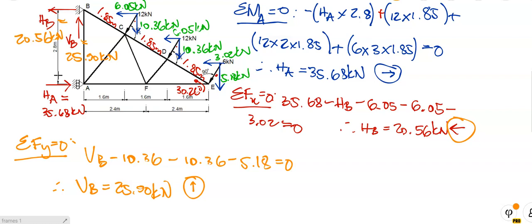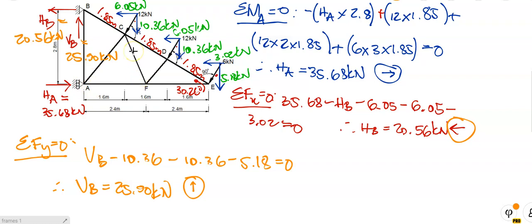In the next lesson I'll start at joint B. Remember the rule: start at a joint where there are not more than two unknowns. Can I start at joint A? No — BA, AC, and AF would all be unknown. Can I start at B? Yes — only BC and BA are unknown. Can I start at joint E? Yes — only DE and AF would be unknown. So I'm going to start at joint B, solve BC and BA, then move to joint A where B is already solved, and then solve AC, AF, and so on. I'll see you in the next video.